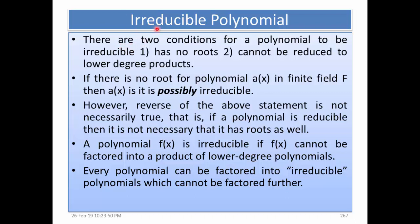Now we will see what an irreducible polynomial is. There are two conditions for a polynomial to be irreducible: number one, it has no roots; number two, it cannot be reduced to lower degree products. If there is no root for polynomial a(x) in finite field f, then a(x) is possibly irreducible. However, the reverse is not necessarily true — if a polynomial is reducible, it does not necessarily have roots. A polynomial f(x) is irreducible if it cannot be factored into a product of lower degree polynomials.